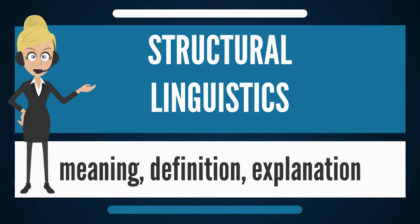The units of a set must have something in common with one another, but they must contrast too — otherwise they could not be distinguished from each other and would collapse into a single unit, which could not constitute a set on its own, since a set always consists of more than one unit.